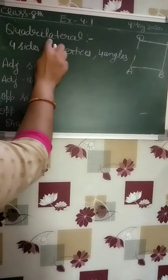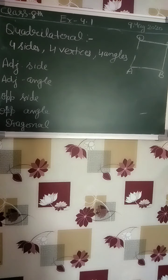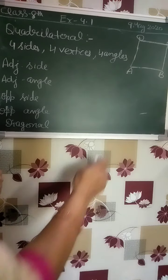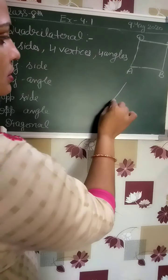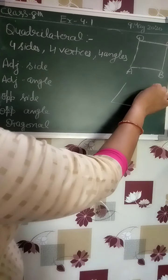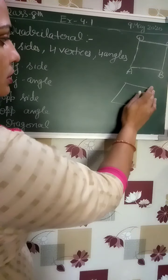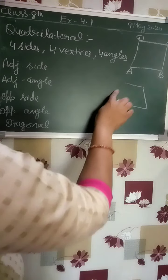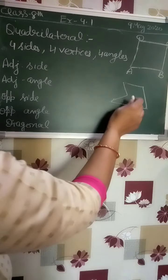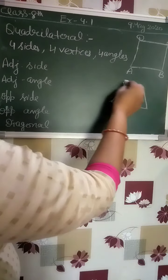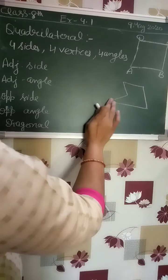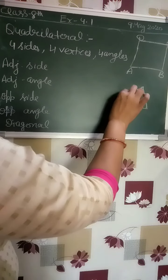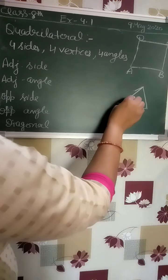We will talk about quadrilaterals. A quadrilateral has 4 sides. There are many types of figures. Suppose they give you that type of figure — that is also a quadrilateral. If they give you another type of figure, that is also a quadrilateral.